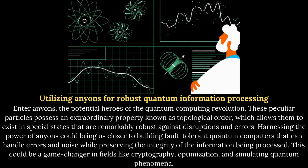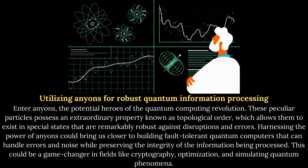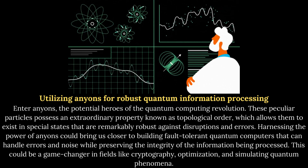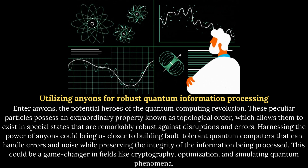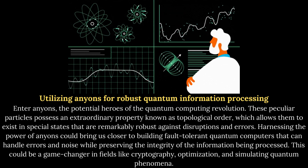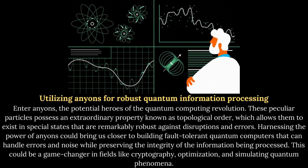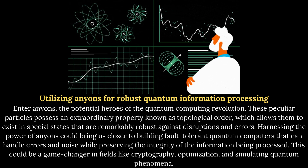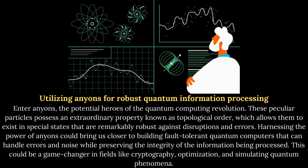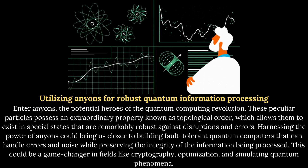Utilizing Anyons for robust quantum information processing. Anyons are the potential heroes of the quantum computing revolution. These peculiar particles possess an extraordinary property known as topological order, which allows them to exist in special states that are remarkably robust against disruptions and errors. Harnessing the power of Anyons could bring us closer to building fault-tolerant quantum computers that can handle errors and noise while preserving the integrity of the information being processed. This could be a game-changer in fields like cryptography, optimization, and simulating quantum phenomena.